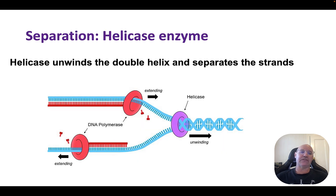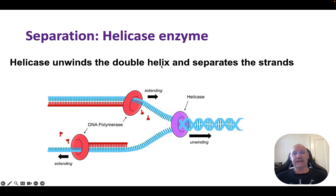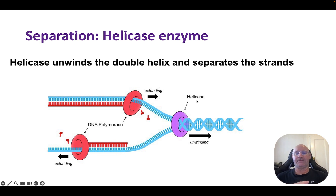The second process, separation, is where the double helix unwinds and the two strands separate. This occurs with an enzyme called helicase — helicase unwinds the double helix and separates the two strands.